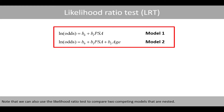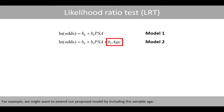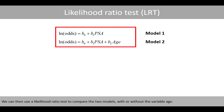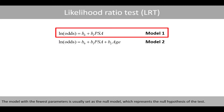Note that we can also use the likelihood ratio test to compare two competing models that are nested. For example, we might want to extend our proposed model by including the variable age. We can then use a likelihood ratio test to compare the two models with or without the variable age. The model with fewer parameters is usually set as the null model, representing the null hypothesis of the test.